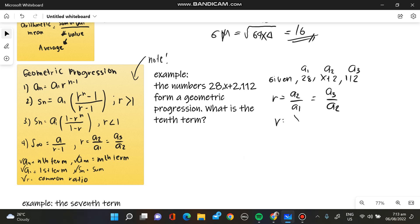So we substitute it, we have X plus 2 all over 28, and A of 3, which is 112 over A sub 2, which is 28.